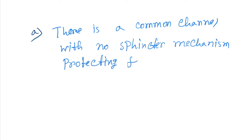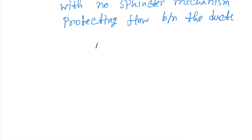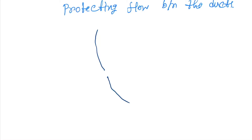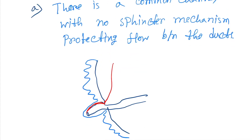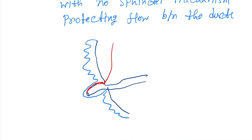In Type A, there is a common channel with no sphincter mechanism protecting flow between the ducts. Looking at the duodenal wall and lumen: the bile duct opens first, then the pancreatic duct, forming the Ampulla of Vater. Between these two ducts there is a common channel with no sphincter.